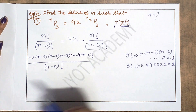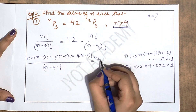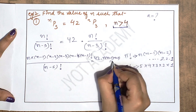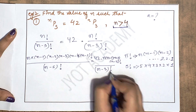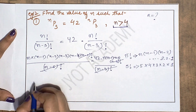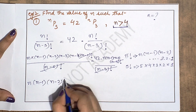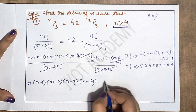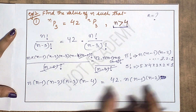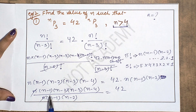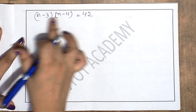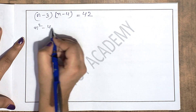Isi tarah doosri side par n! ko (n−3)! tak open karenge: n × (n−1) × (n−2) × (n−3)!, aur (n−3)! cancel ho jaayega. Cancel hone ke baad left side mein: n(n−1)(n−2)(n−3)(n−4), aur right side mein: 42 × n(n−1)(n−2). Common factor n(n−1)(n−2) cancel karke milta hai: (n−3)(n−4) = 42.